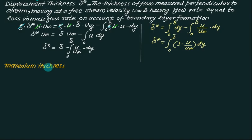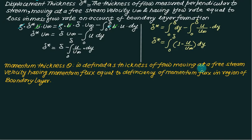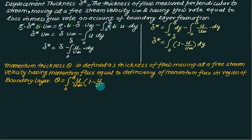Similar to displacement thickness (which represents loss of mass), momentum thickness θ represents the loss of momentum. It is defined as the thickness of flow at free stream velocity having momentum flux equal to the deficiency — the loss of momentum flux in the boundary layer region. The formula is: θ = integral from 0 to delta of (u/u-infinity)(1 minus u/u-infinity) dy. Here, u/u-infinity represents a velocity term and (1 minus u/u-infinity) the loss of mass, so their product gives momentum.